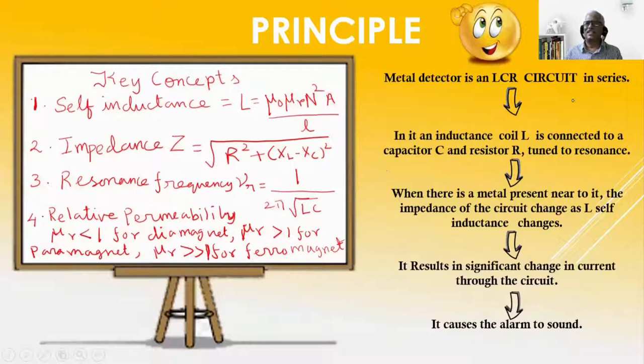Metal detector is an LCR circuit in series. In it, an inductance coil L is connected to a capacitor C and resistance R tuned to resonance. When there is a metal present near to it or the metal is passing through the metal detector, the impedance of the circuit changes as self inductance L changes. It results in significant change in the current through the circuit. It causes the alarm to sound.